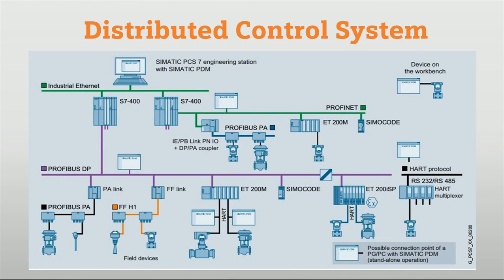First, we will see the architecture of the DCS system. At the top side we have engineering stations. From the engineering stations we can generate new projects, make programming for the automation station, and hardware configurations can be done. This engineering station has dedicated software for parameterization, programming, and documentation. The engineering station and automation station are connected with the plant bus, and for plant bus we mostly use Profinet or industrial Ethernet.